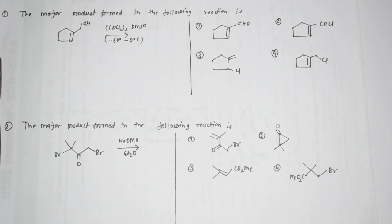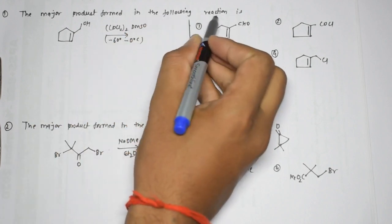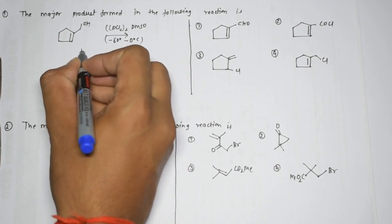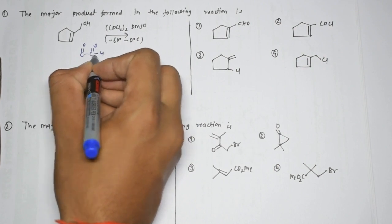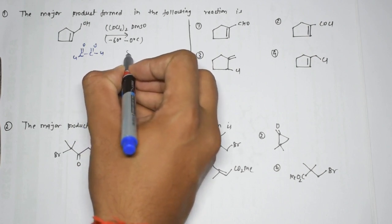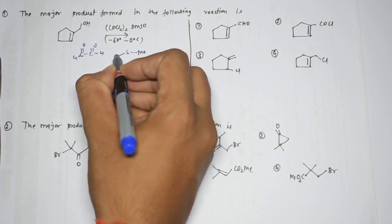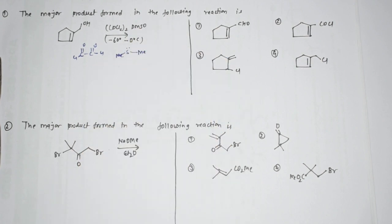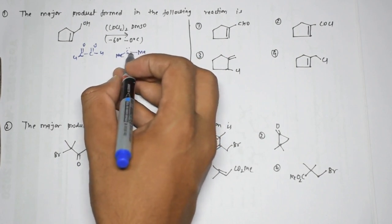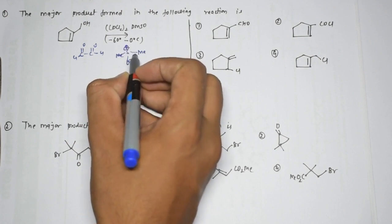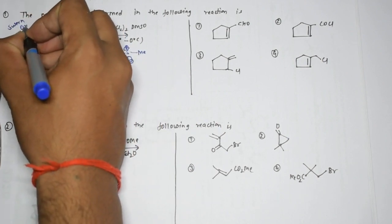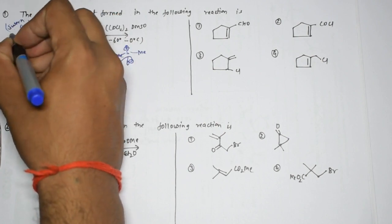The first question asks for the major product formed in the following reaction. We have COCl₂ - that's C double bond O, with C double bond O, Cl and Cl - and we also have DMSO with two methyl groups. The sulfoxide gives O-minus, and sulfur carries a positive charge. This O-minus attacks, making it similar to a Swern oxidation reaction.